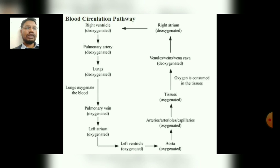After entering into the vena cava, veins, and venules, this deoxygenated blood is directed to the right atrium. The right atrium, after carrying the deoxygenated blood, further moves the blood towards the right ventricle with the help of its walls.